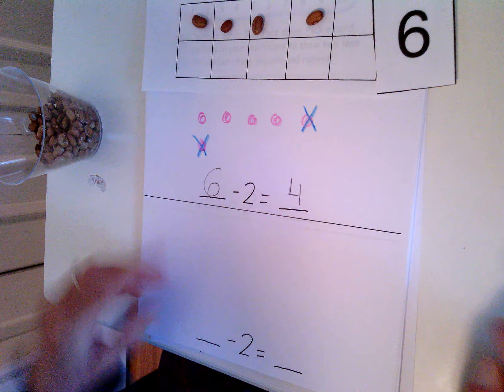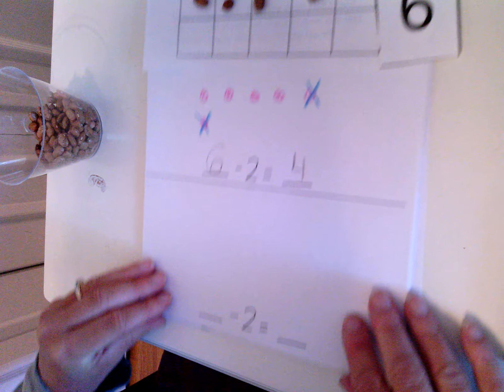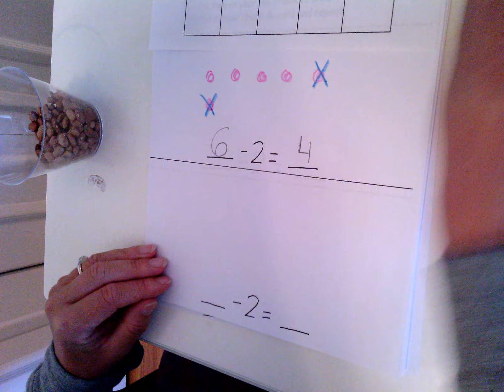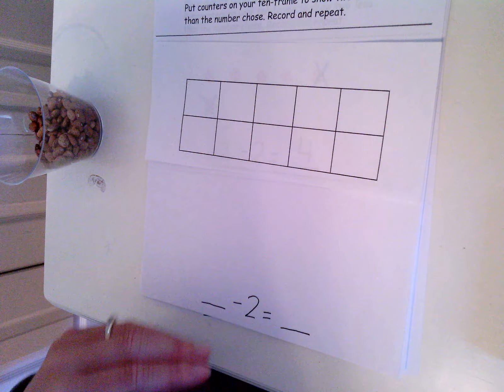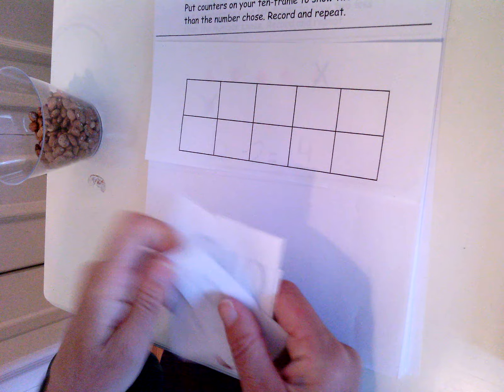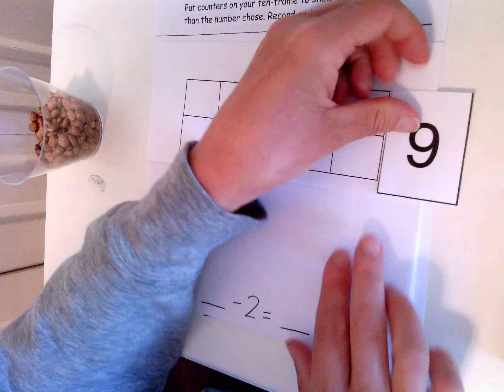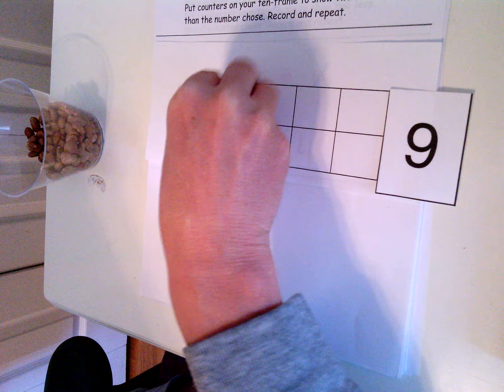Let's try again. I'm going to pick a number from face down. Oh, this time I got nine! Let's put nine on our ten-frame: one, two, three, four, five, six, seven, eight, nine.